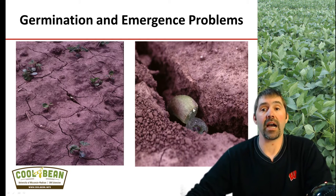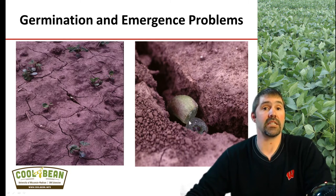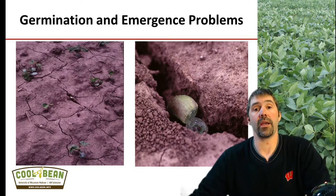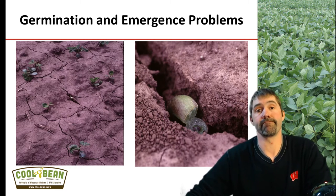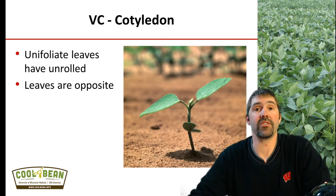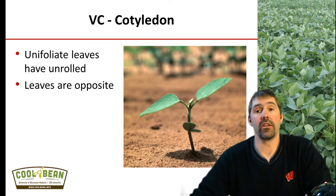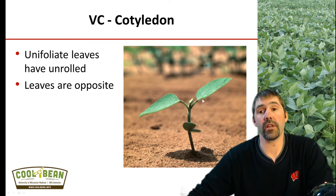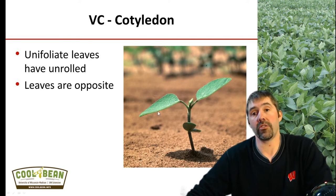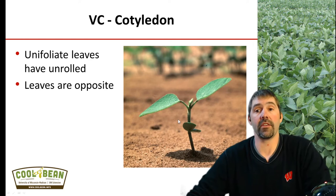What we can see is that where the hypocotyl is beginning to emerge and push itself through that crust, it will actually break that stem. Once that hypocotyl is broken, that plant is effectively dead. It will not be able to grow because we don't have any of the meristems for that soybean plant to continue growth. After we get the plant out of the ground, the first true leaves are known as the VC or the Cotyledon growth stage, identified by unifoliates placed opposite to one another — just one single leaf at this growth stage.